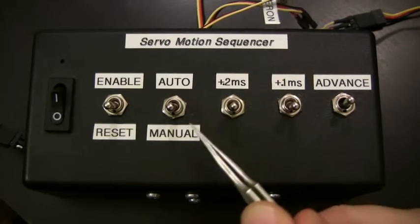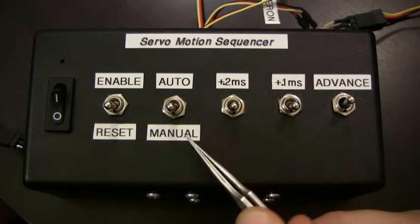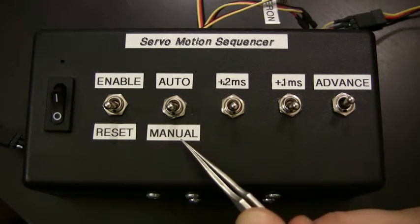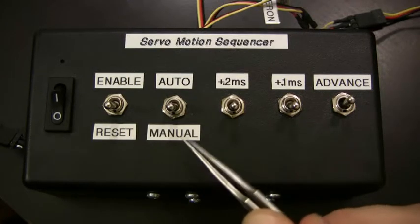There's an automatic manual switch where in automatic mode the servos go through an automated timed sequence, and in manual mode the user can advance them manually and control the duration of each of the steps.